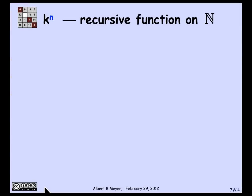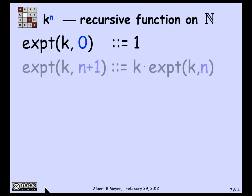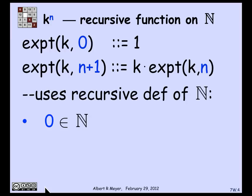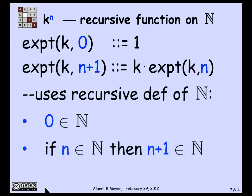Let's look at another familiar example of a recursive definition: the nth power of an integer or real number k. The 0th power of k is defined to be 1, and the (n+1)th power of k is k times the nth power of k. This is an executable definition of exponentiation in many programming languages. This familiar recursive definition on a non-negative integer n is in fact a structural induction using the fact that the non-negative integers can be defined recursively: 0 is a non-negative integer, and if n is a non-negative integer, then n+1 is a non-negative integer.